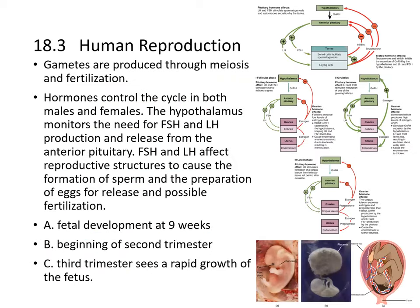In human reproduction, gametes are produced through meiosis and fertilization. Hormones control the reproductive cycle in both males and females. The hypothalamus monitors the need for FSH and LH production, triggering their release from the anterior pituitary. FSH and LH affect reproductive structures to cause sperm formation and prepare eggs for release and possible fertilization.